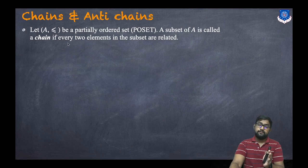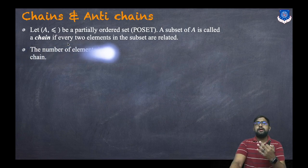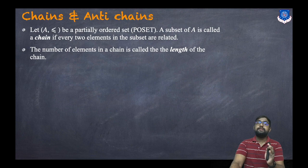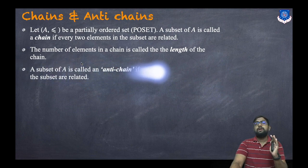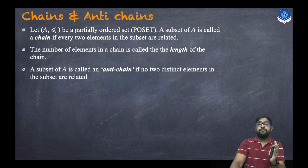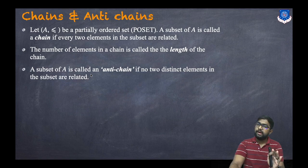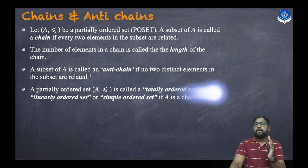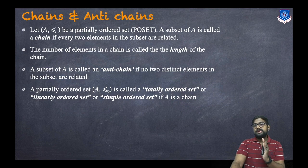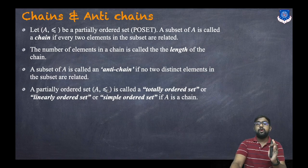A subset of A is called a chain if every two elements in the subset are related. The number of elements in a chain is called the length of the chain. A subset of A is called an anti-chain if no two distinct elements in the subset are related. A partially ordered set (A, ≤) is called a totally ordered set, linearly ordered set, or simply ordered set if the whole set A is a chain.